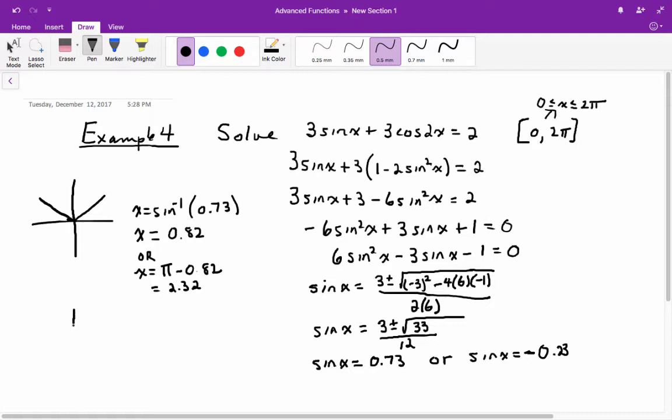This other one down here where sine is negative, it's going to be in the bottom two quadrants. So x is going to be equal to the inverse sine of negative 0.23, which when you do it, you're actually going to end up with x being 0.23 radians.